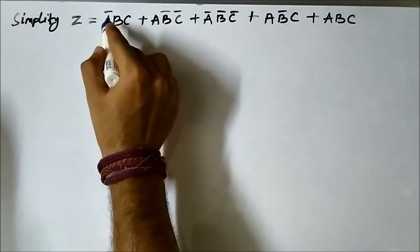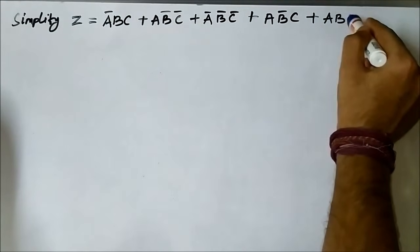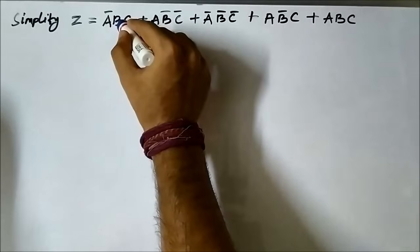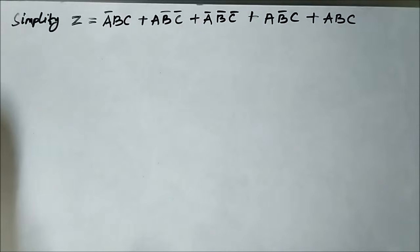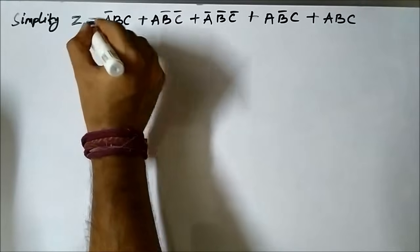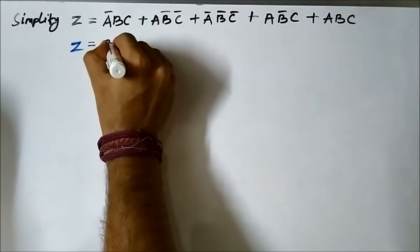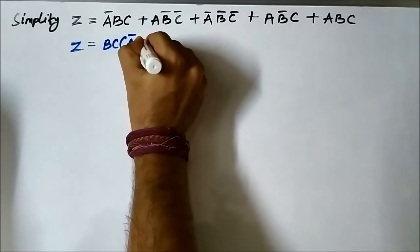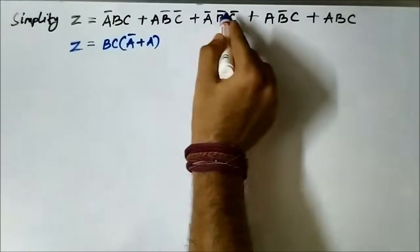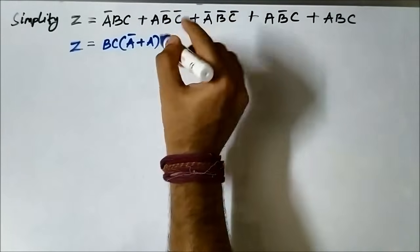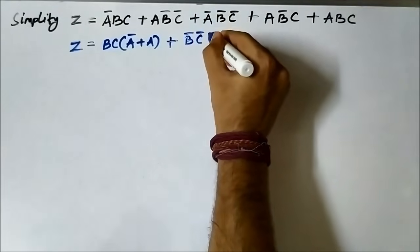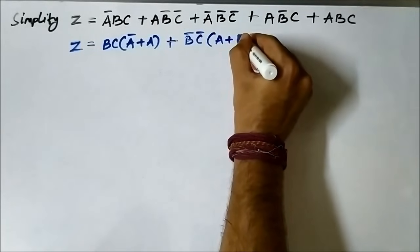Look at this term ā·b·c and this term a·b·c. Both terms have b·c in common. So let us take b·c as common — it will be b·c·(ā + a). Also, in these two other terms, b̄·c̄ is common, so we can write b̄·c̄·(a + ā).